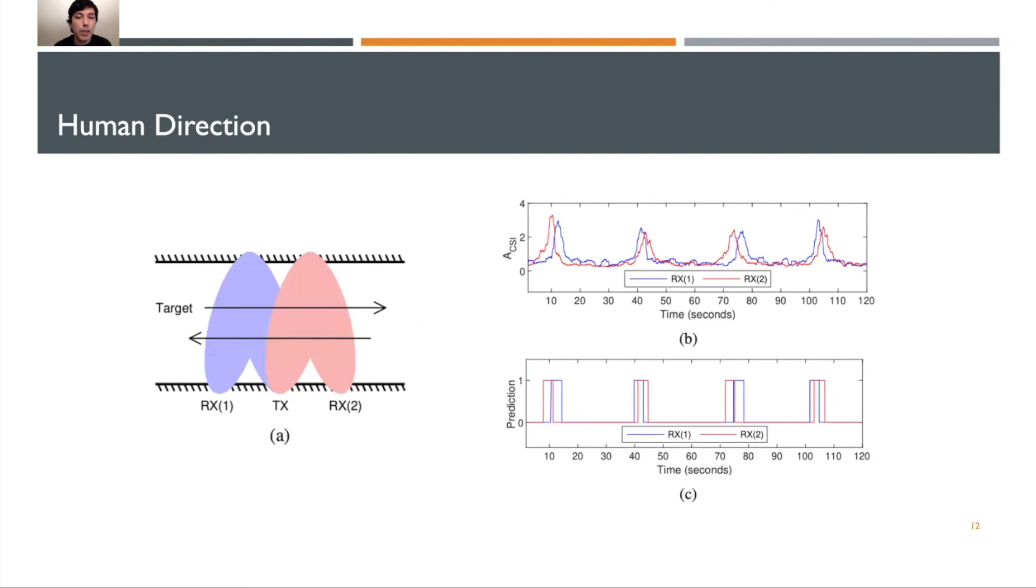Finally, we look at leveraging this work to understand human direction. We can visually see previously that a target was present or not present. However, with a single transmitting antenna and a single receiving antenna, we are unable to understand the direction. Instead, if we leverage two receivers, one and two, and a single transmitter in the middle, we can gather two streams of ACSI at the same time.